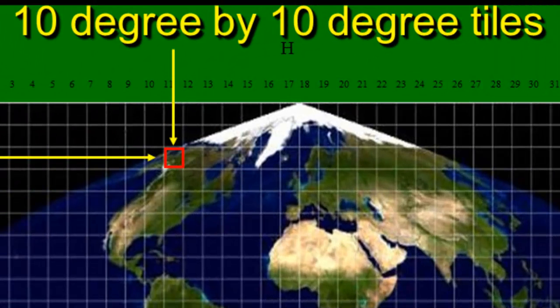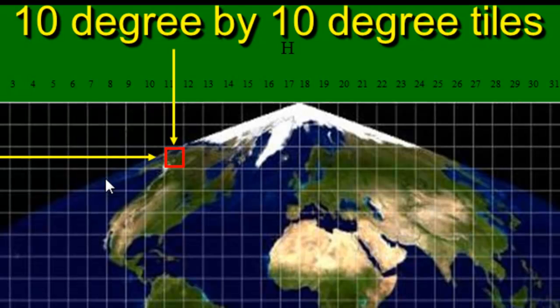MODIS products are served up as tiles, and each tile is 10 degrees wide and 10 degrees high. You order them based on the vertical number (V) and the horizontal number (H). For example, the tile covering interior Alaska would be V02 H11, and it would be delivered in the sinusoidal projection.